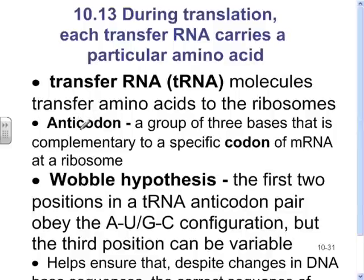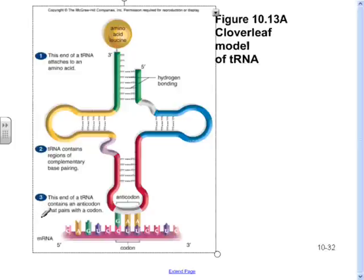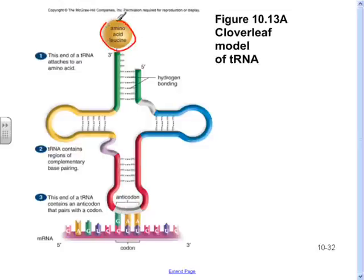tRNA stands for transfer RNA — it brings amino acids to the ribosome. On the tRNA there's a structure called an anticodon, which matches up with the codons on the mRNA. The tRNA has a hairpin structure: the anticodon at the bottom matches the codon on the mRNA, and the top of the tRNA is where the amino acid attaches.